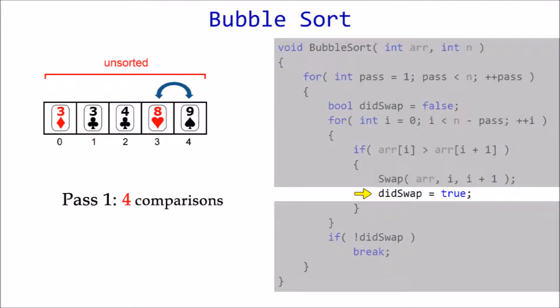Because we have compared all unsorted elements, our first pass is complete, which means nine becomes part of the sorted section.